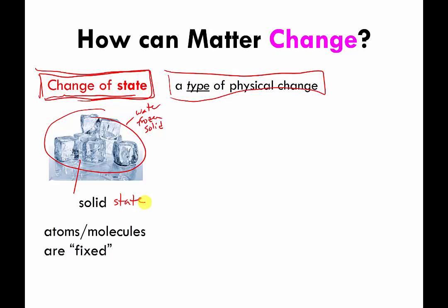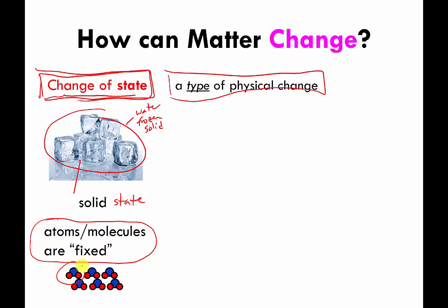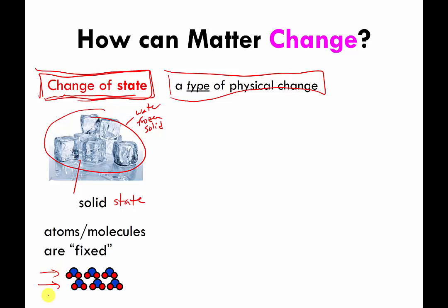If you could zoom in and look at the atoms or molecules in your solid ice, the atoms or molecules are relatively fixed — they're not moving very much. You can think of them as lined up in rows, more or less stuck in place. In this cartoon version of water molecules in ice, they would be lined up in somewhat nice neat rows. This is when your water is in a solid state.